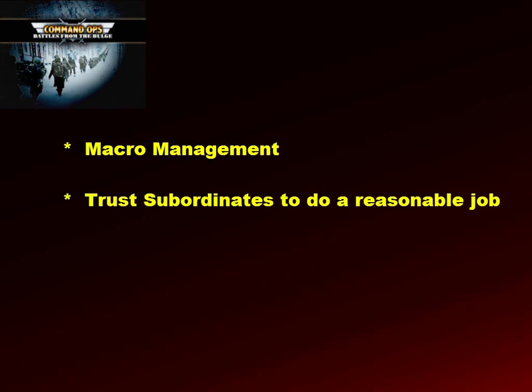For macromanagement to work, the commander has to be able to trust that his subordinate commanders will do a reasonable job. The competencies of subordinates can vary, which is why good commanders keep a watchful eye on them. For this to work in a simulation, the artificial intelligence needs to be powerful enough to do a reasonable job of managing subordinate forces — and having such an AI lies at the heart of Command Ops.